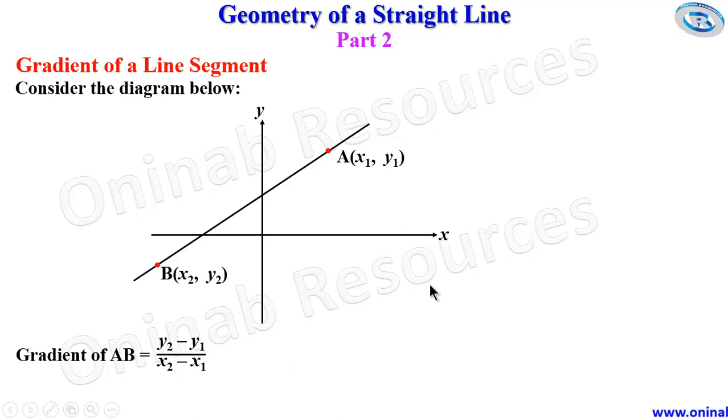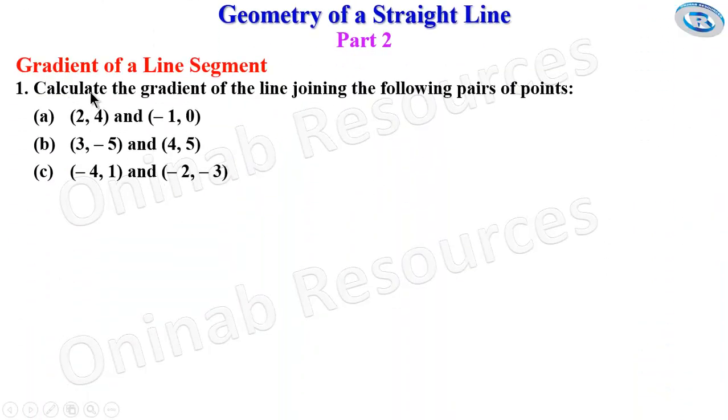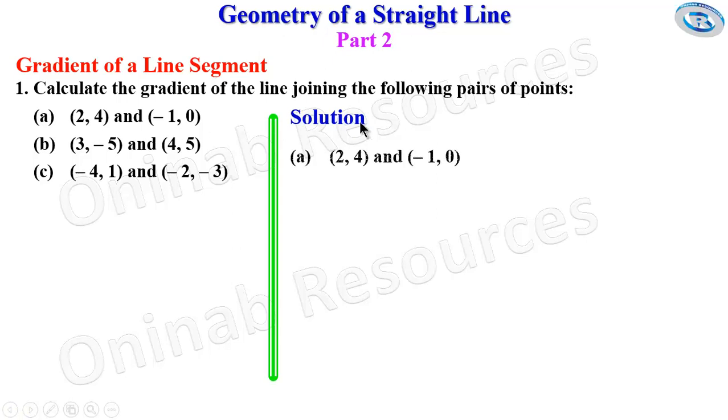We then go ahead to solve some problems. Problem 1: Calculate the gradient of the line joining the following pairs of points. We have the pairs of points in A, B, and C. So we start the solution for problem 1A.